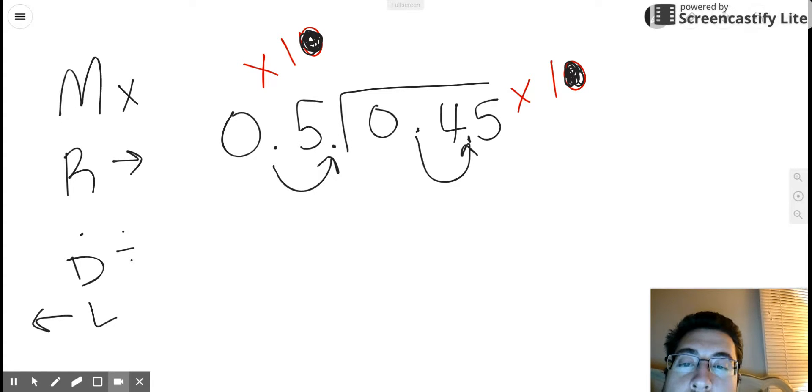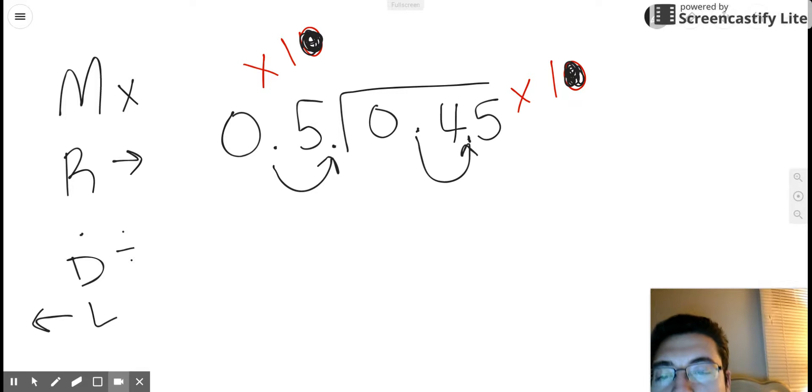So I'm going to go ahead and rewrite this problem below. I now have 5 as my divisor and in my dividend.